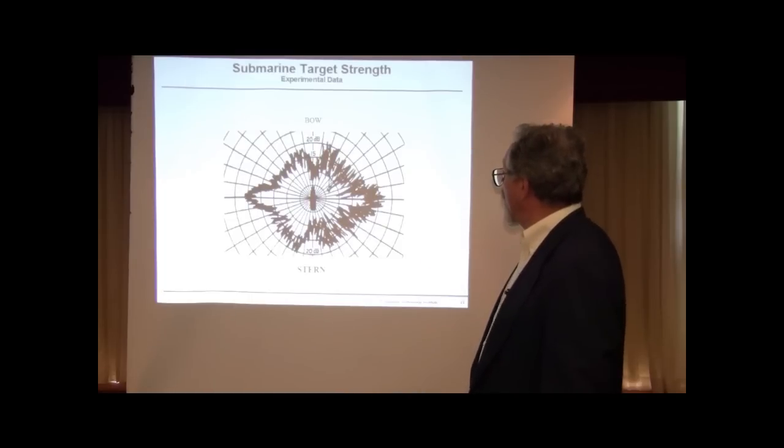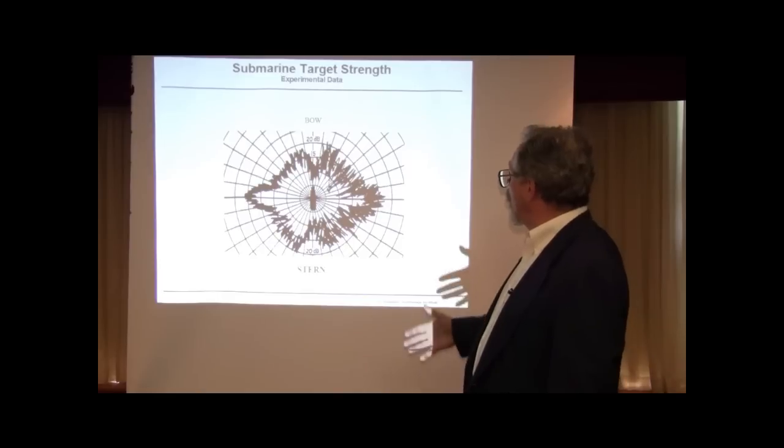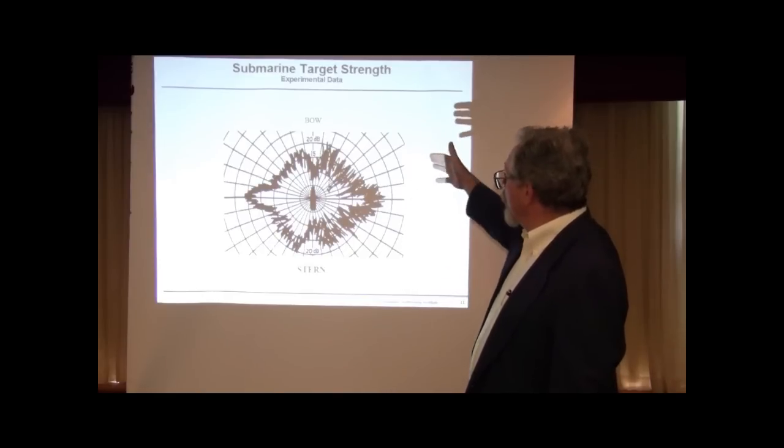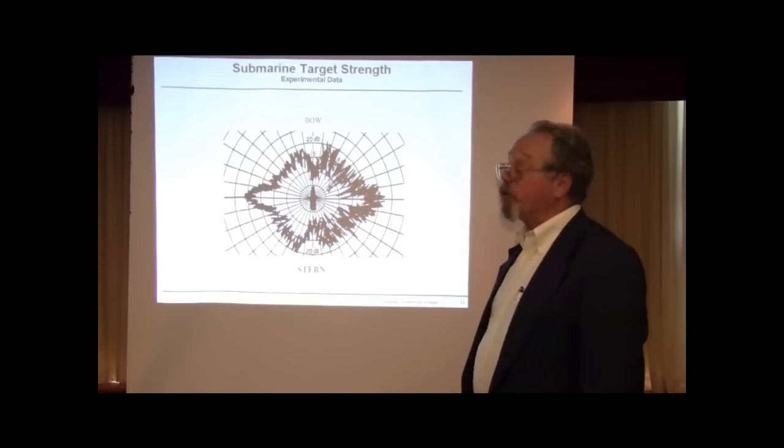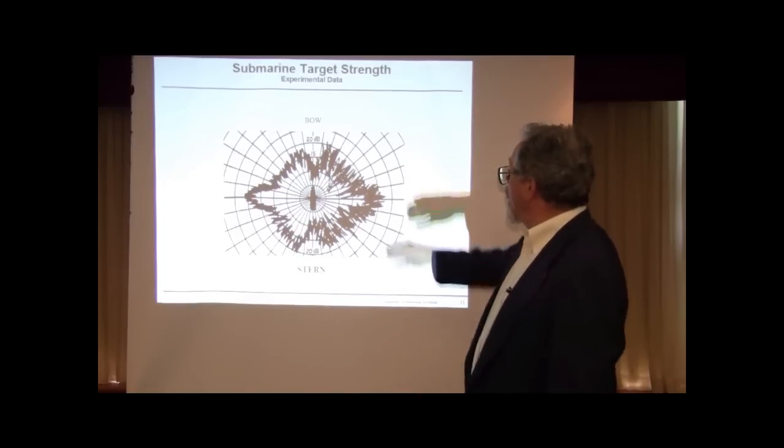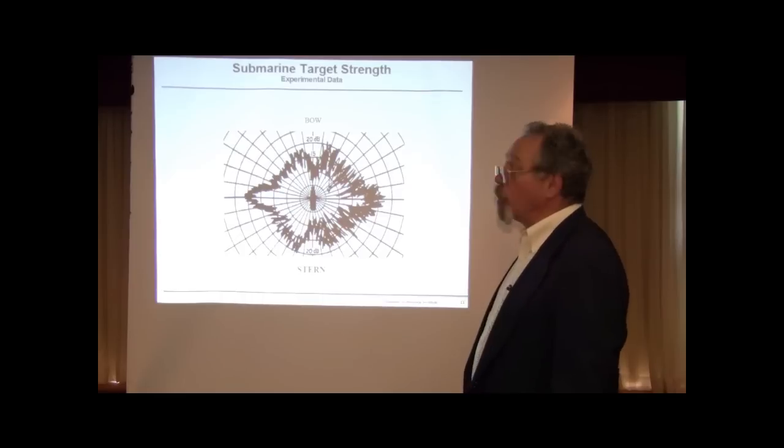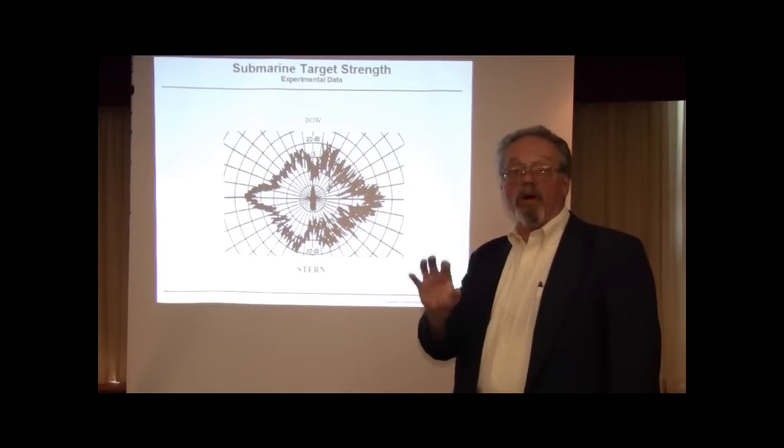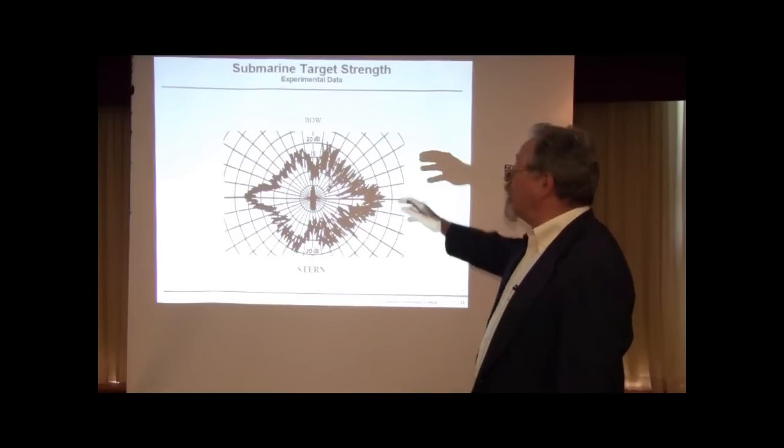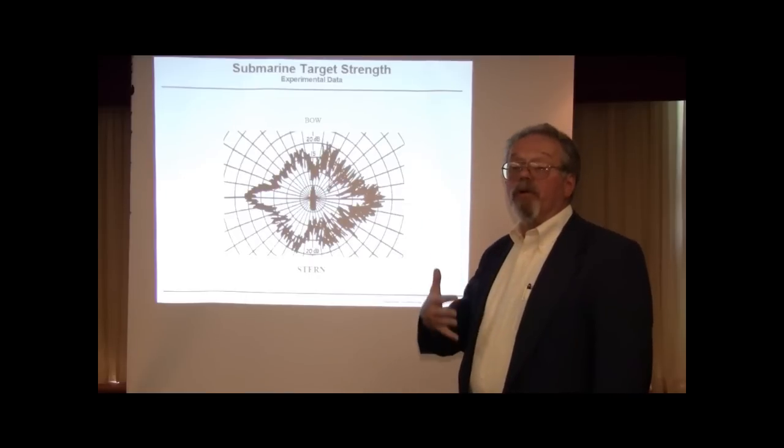This is an illustration of target strength of a submarine where you have sort of a butterfly shape, but you have lots of fluctuations on it. The typical target strength is lower in the bow and stern directions of the submarine because that's the smallest projected area, and it's higher broadside if you're broadside to the beam of the submarine.